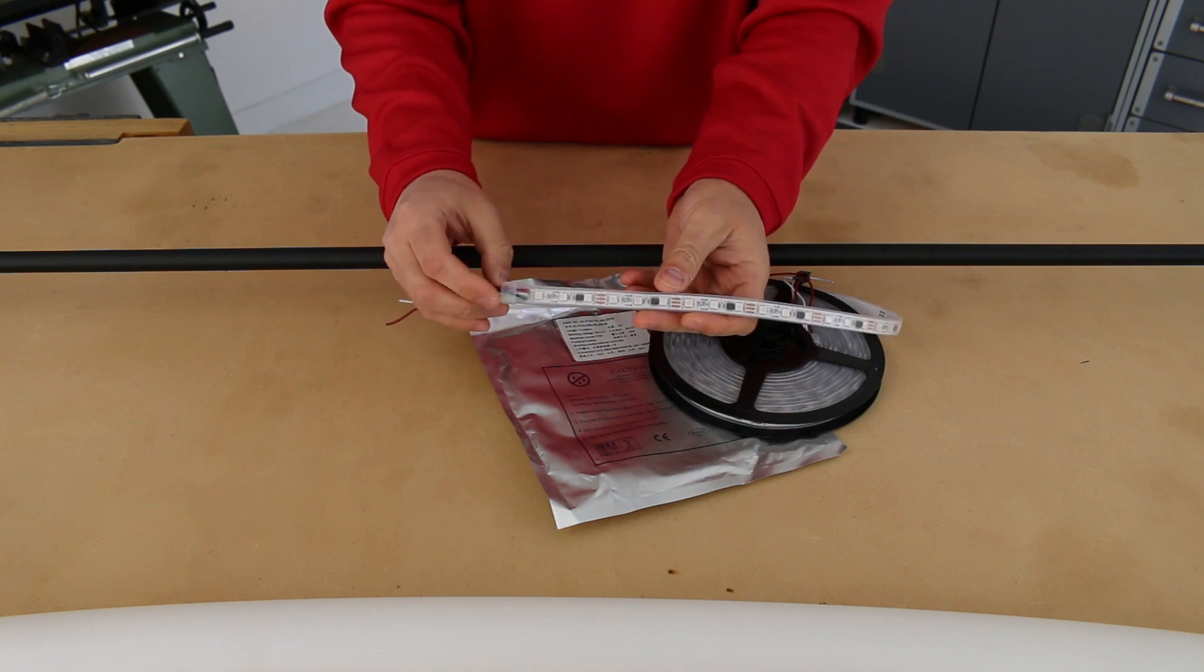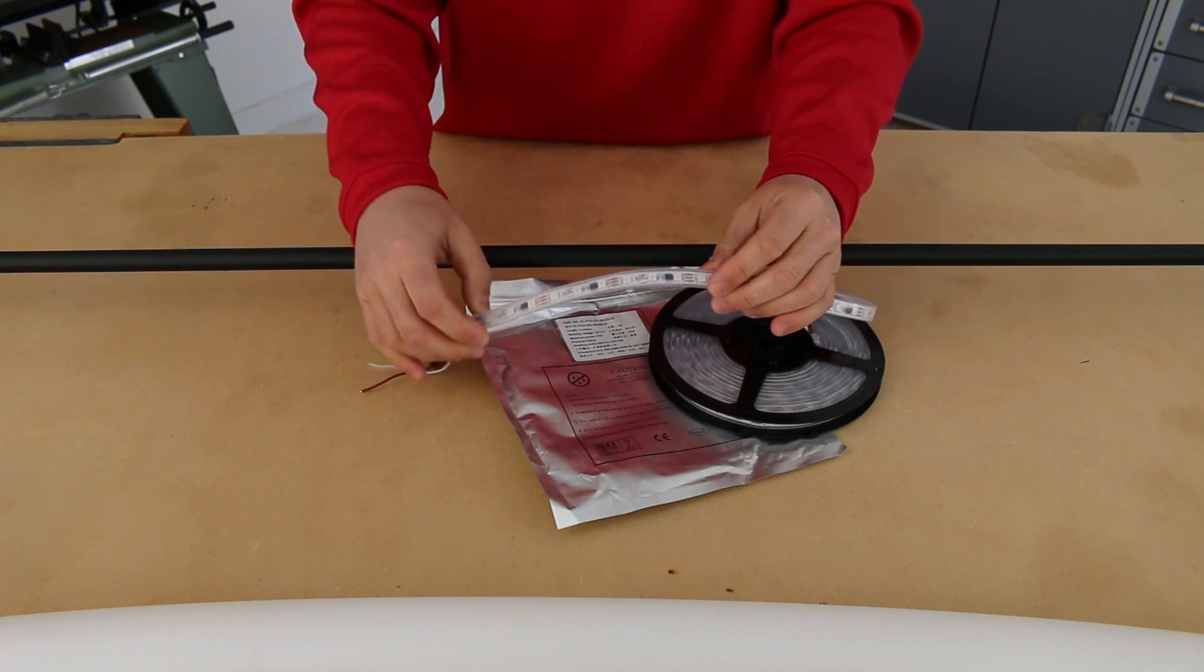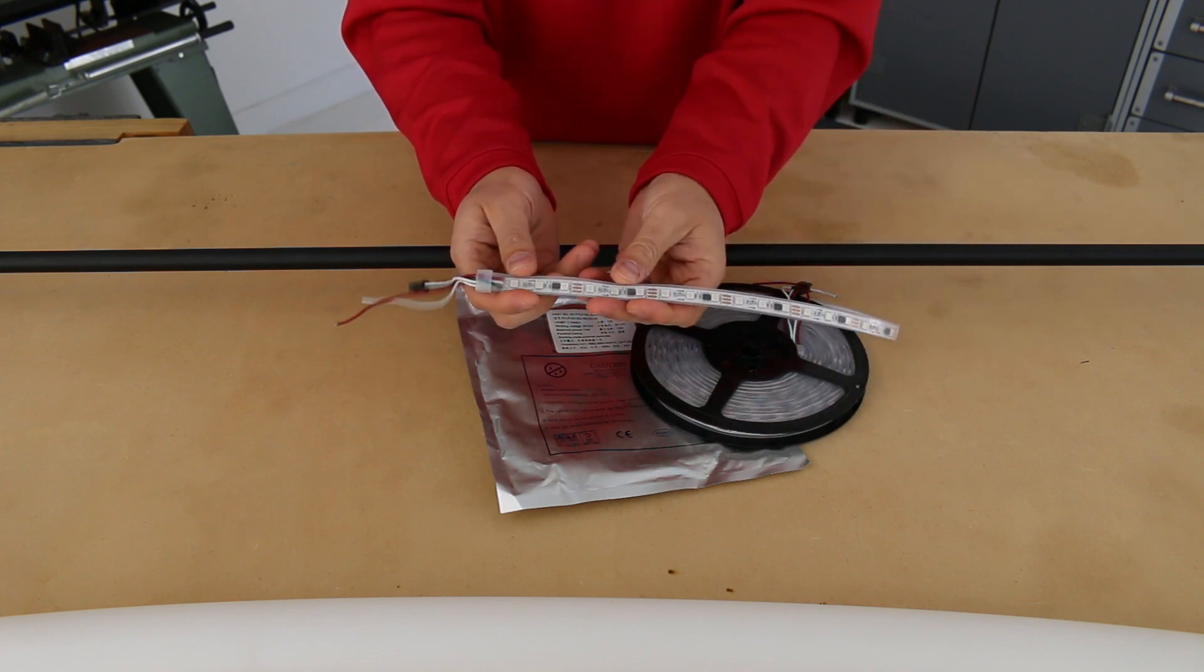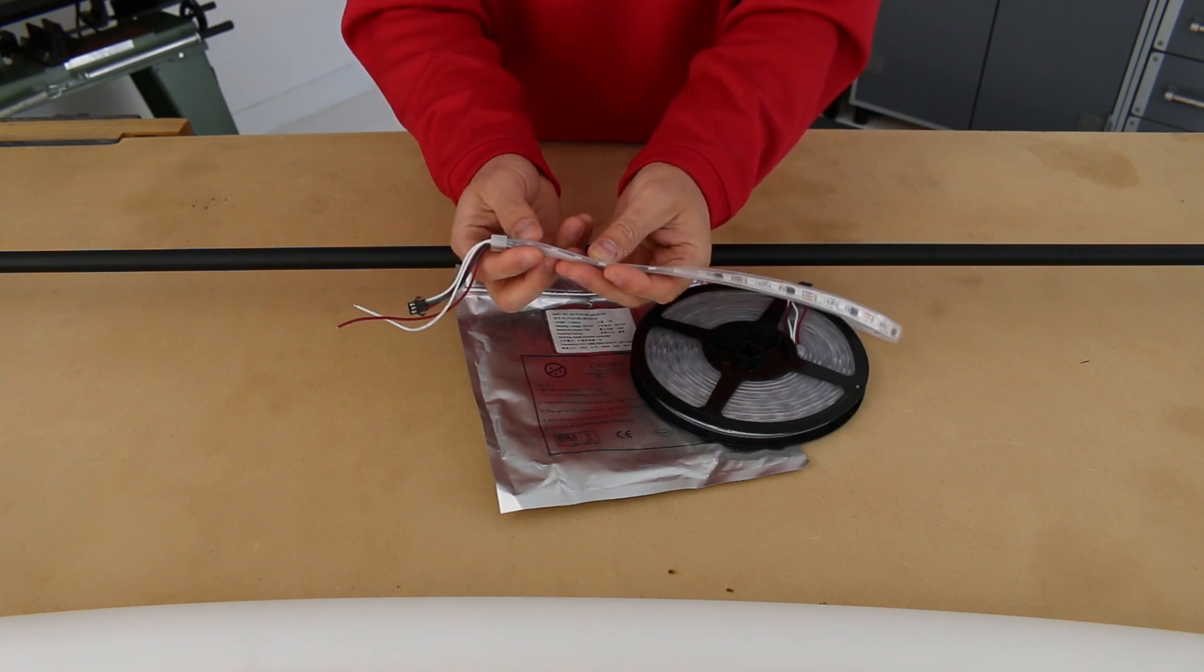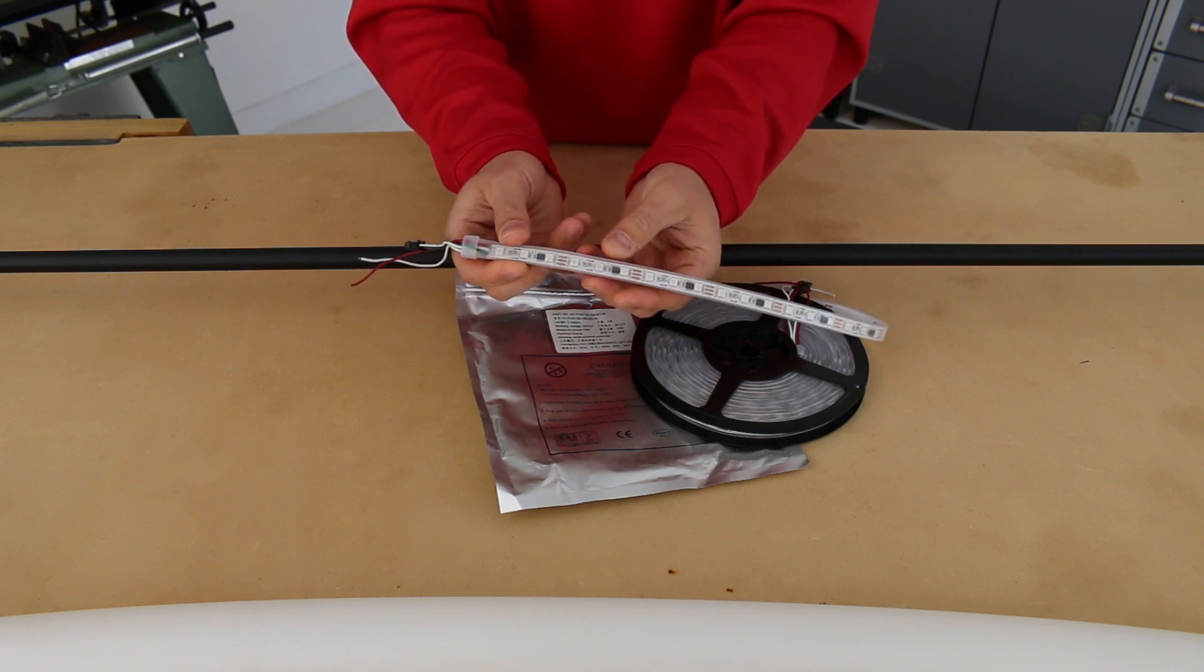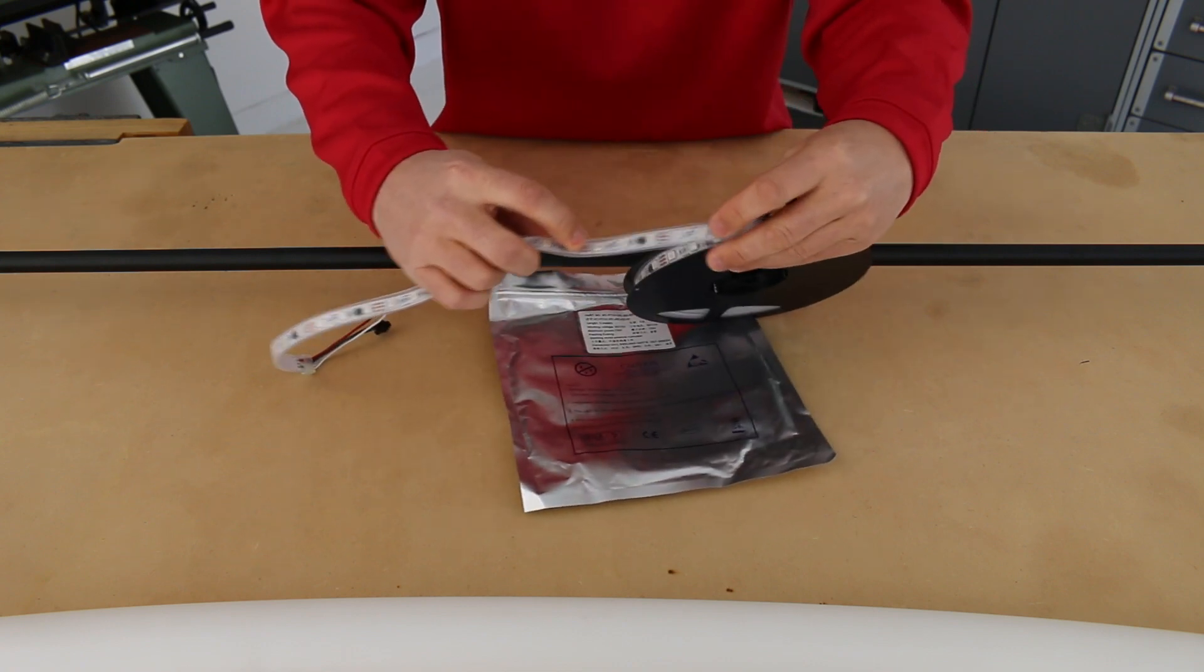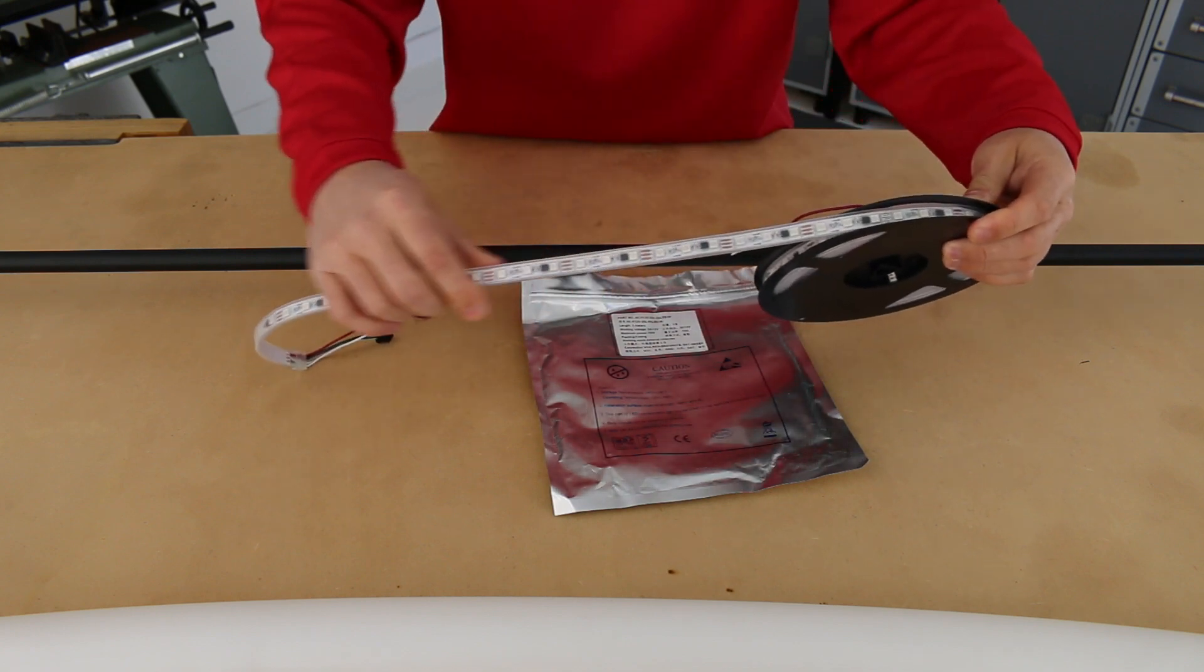This allows you to use your computer to sequence it to the music. This pixel strip has 60 pixels per meter. It gives a good dense look to the effects as you do certain things such as chases. It has a waterproof rubber sealant around it to help prevent moisture from affecting the circuit boards, and you can cut it and solder it just like you would any other wires to fit the size of your arch.